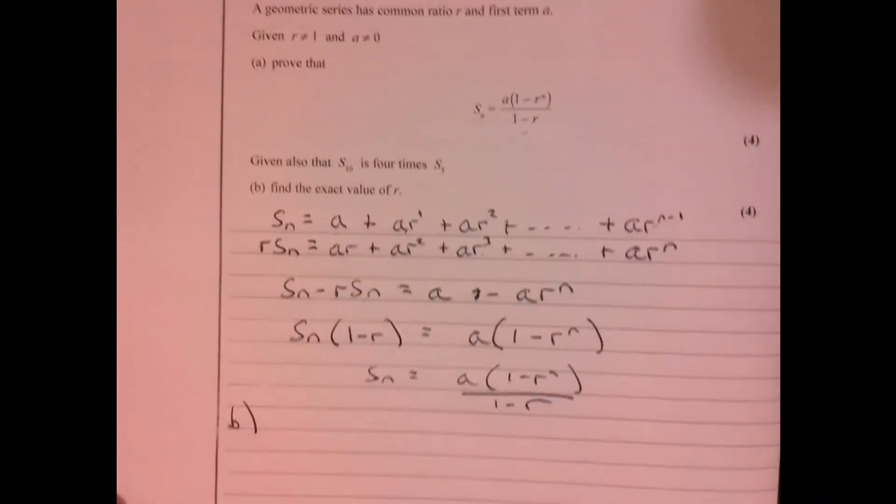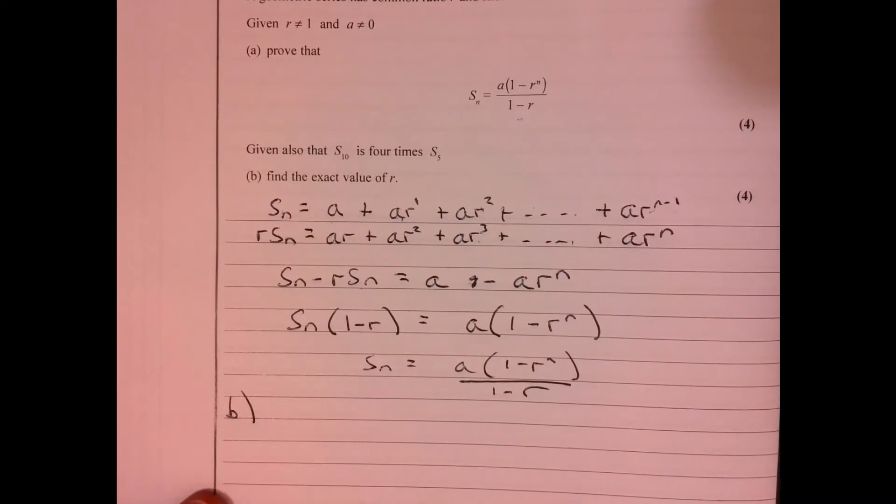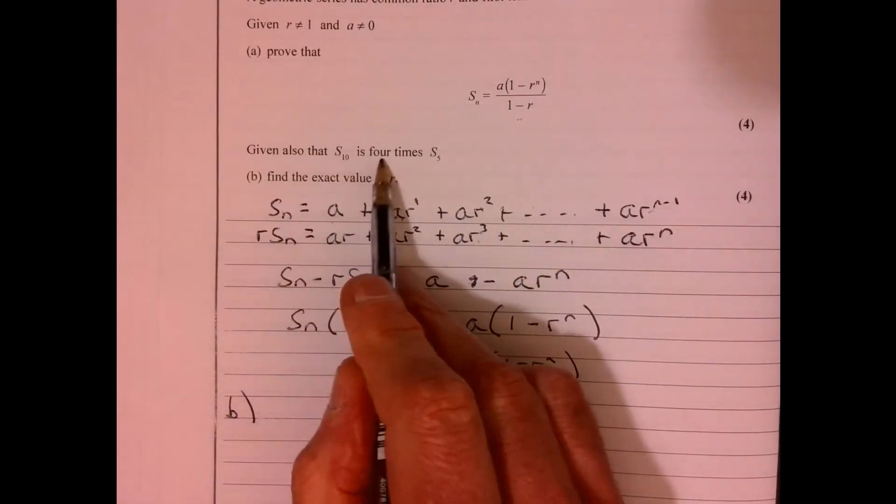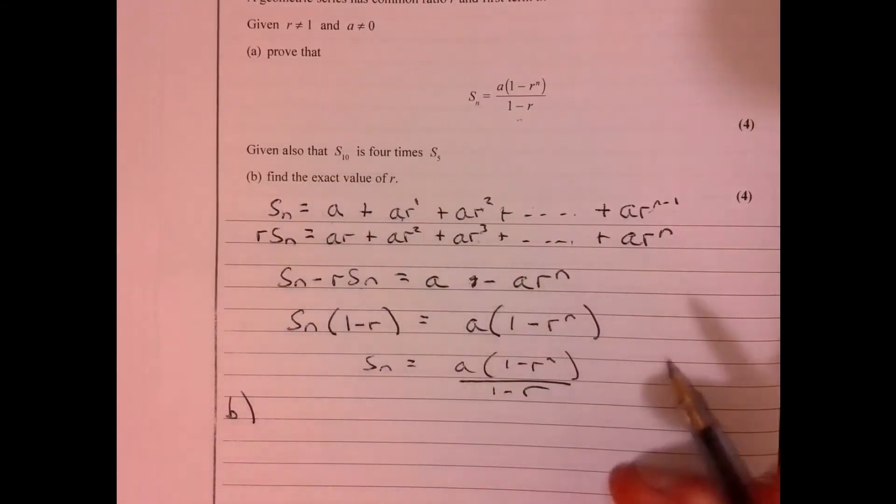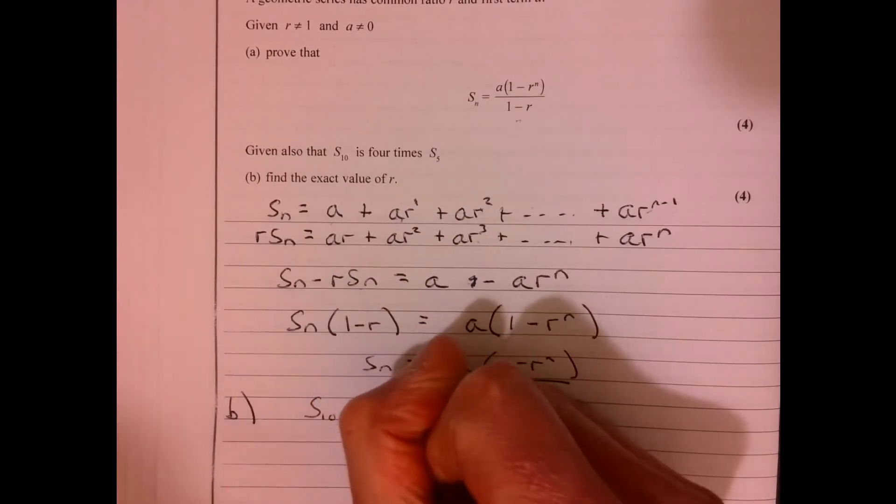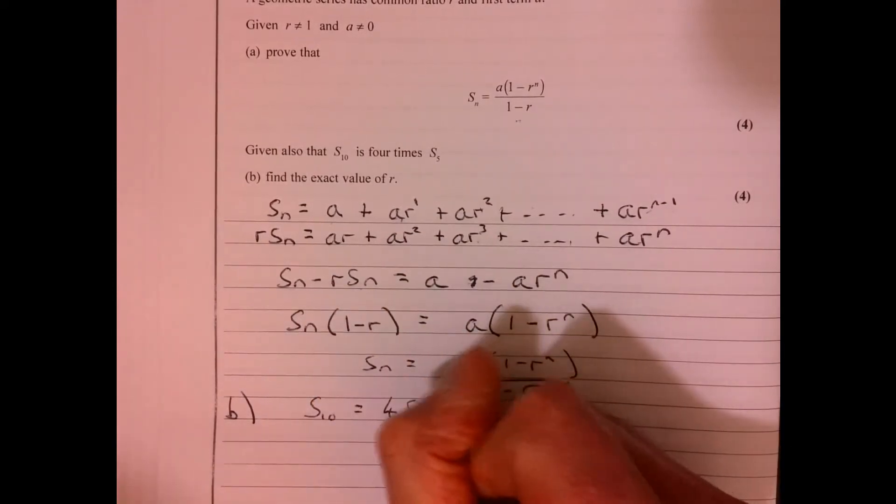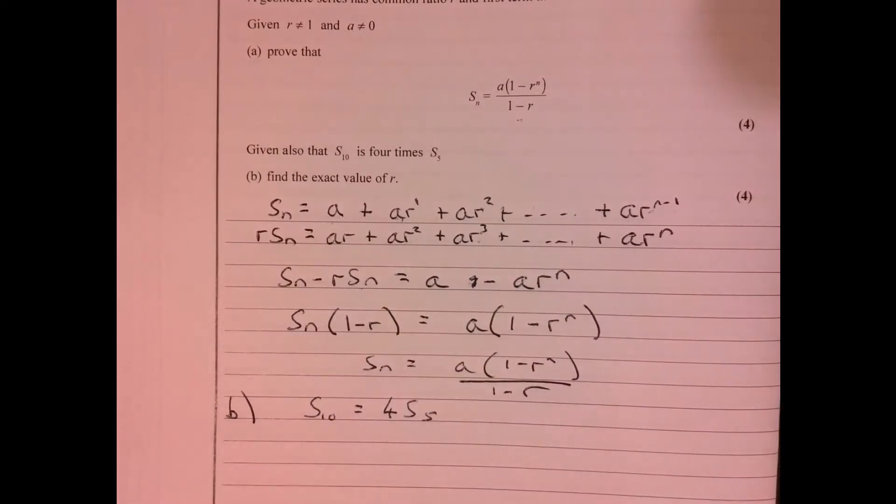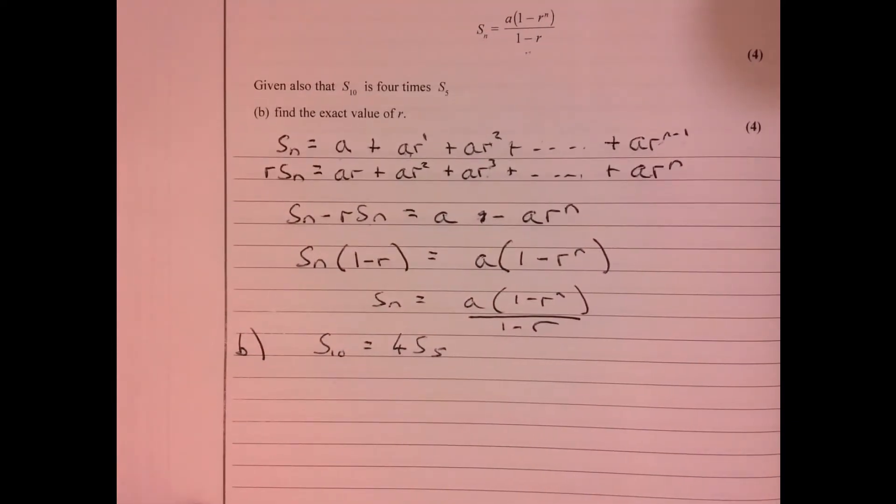Okay, so part b, it tells us that s10 is 4 times s5, so let's just summarize that. That's 4 times s5. Okay, so let's just write that out.